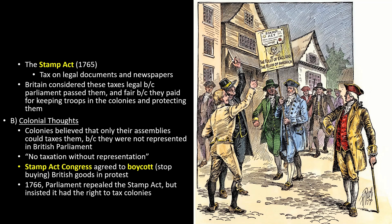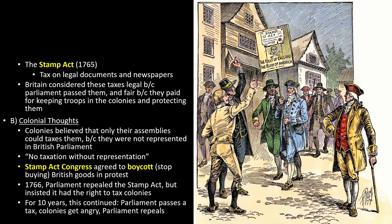Repealing the Stamp Act showed weakness. Think of it like a parent who backs down when their child threatens to throw a fit — they just taught the child they can be made to back down. The most powerful country in the world backed down when the colonies screamed loud enough. Great Britain did pass the Declaratory Act, saying from now on when we pass a tax we mean it. But for 10 years this pattern repeated: Parliament passes a tax, colonists get angry, Parliament backs down. And every time Parliament showed weakness, it made the American colonies even more bold.